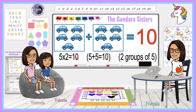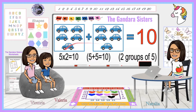Another way we can write it is repeated addition — five plus five — because there's five cars in each group, but we have to add it two times because there's two groups. And the third way we can write it is two groups of five, because there's two groups and there's five cars in each group. And no matter how you write it in this example, you always get ten.